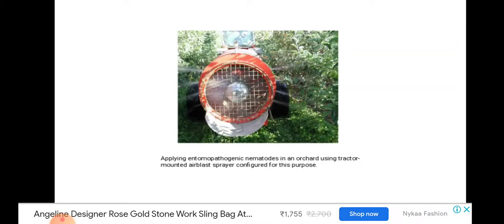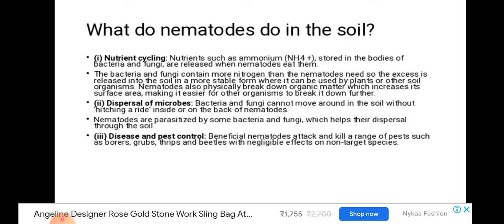You can see here EPNs being applied in an orchard using a tractor-mounted airblast sprayer configured for this purpose. What do nematodes do in the soil? In nutrient cycling, nutrients such as ammonium stored in the bodies of bacteria and fungi are released when nematodes eat them. Bacteria and fungi contain more nitrogen than nematodes need, so the excess is released into the soil in a more stable form where it can be used by plants or other soil organisms. Nematodes also physically break down organic matter, increasing its surface area and making it easier for other organisms to break it down further.